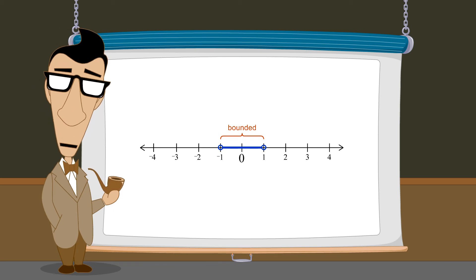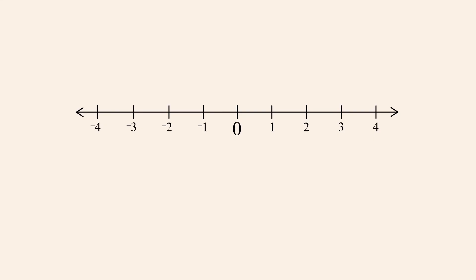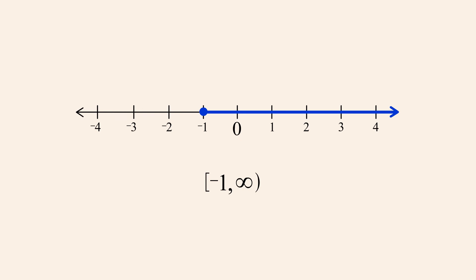But what if an interval has no upper or lower bound? There are three types of unbounded intervals. If an interval has no upper bound, we say that the interval is right unbounded. In interval notation, this is indicated by replacing the right endpoint with an infinity symbol.